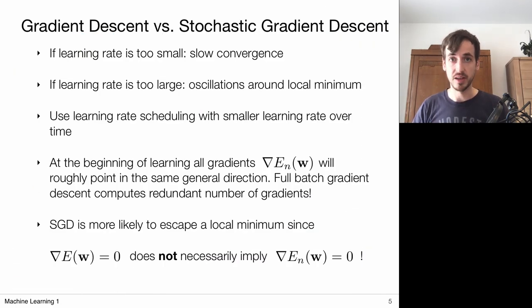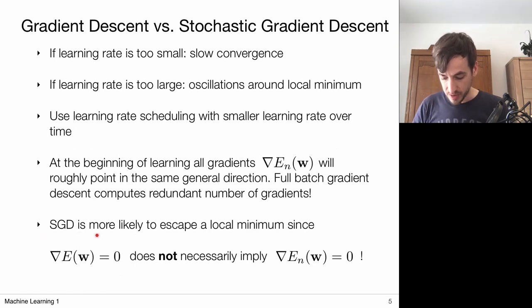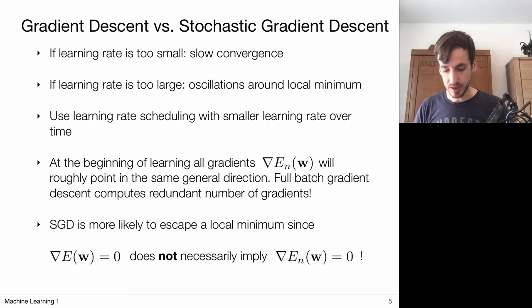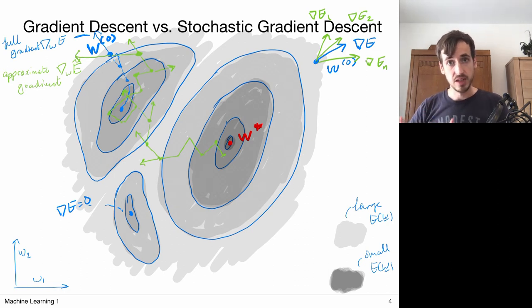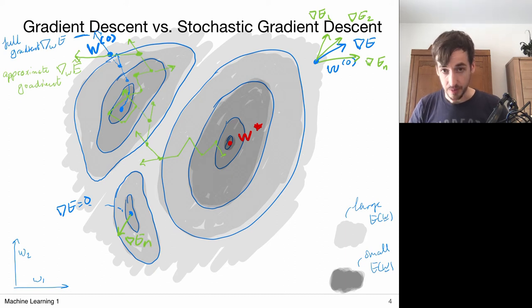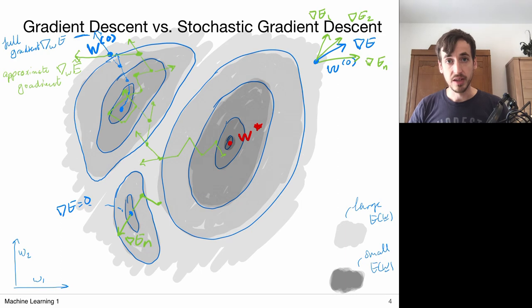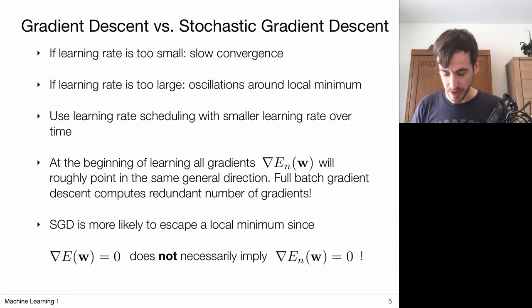To summarize: I do not necessarily need the full gradient because all my gradients are roughly aligned, so I can make an estimate with one or a couple of data points. Additionally, stochastic gradient descent is more likely to escape a local minimum: if my total gradient is zero at some point, that doesn't necessarily mean the gradient is zero for each individual data point. Visualizing this — if the true gradient here is zero, because the landscape looks slightly different for every data point, for a particular data point the gradient might not be zero. I would then take a step in that direction, allowing escape from local minima. Working with these noisy gradients really allows you to escape local minima.